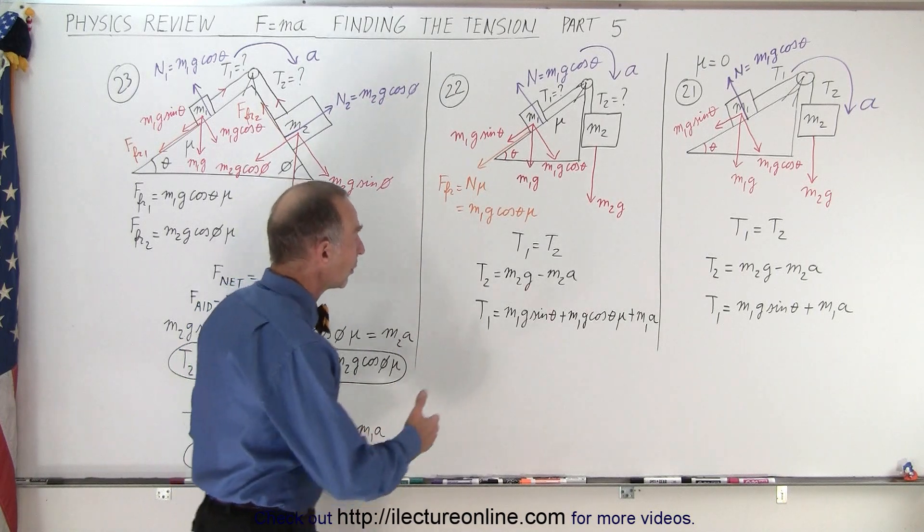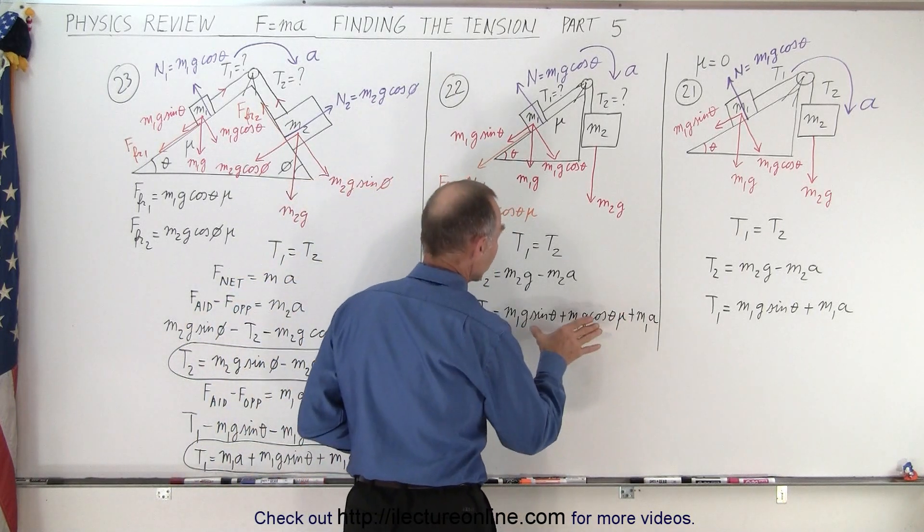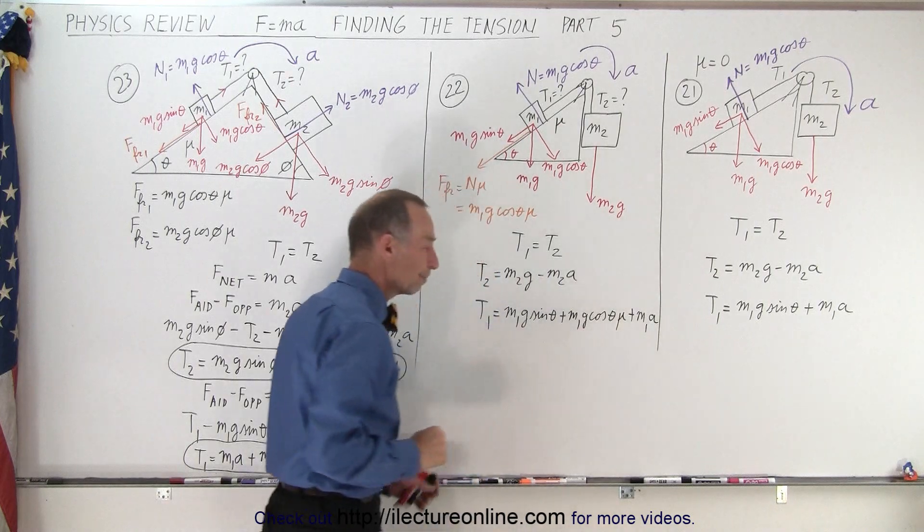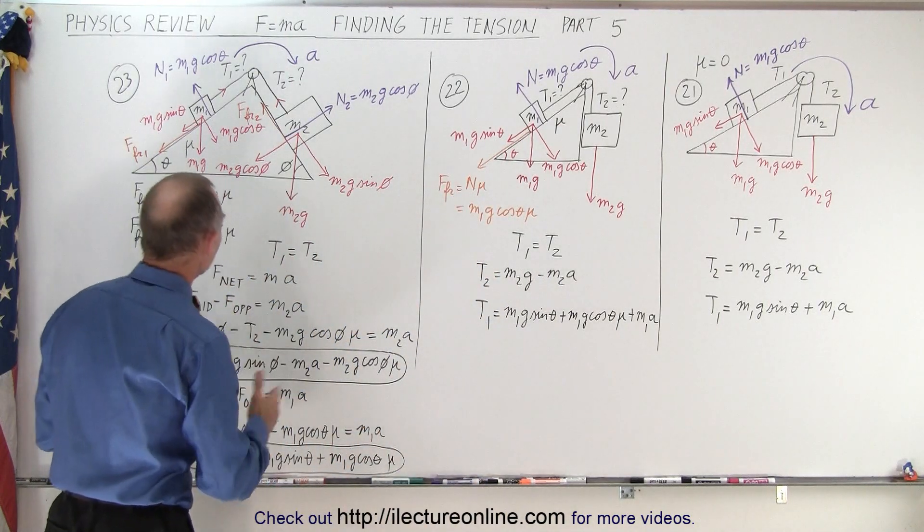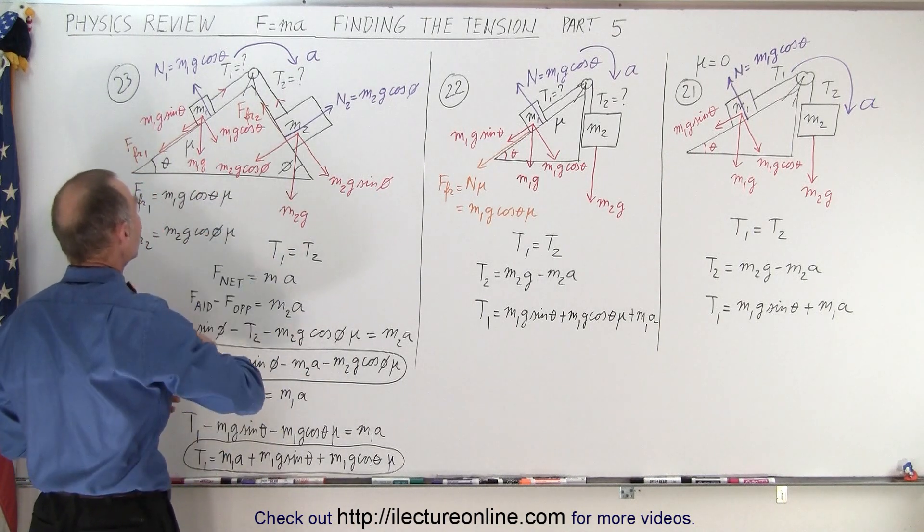And so you can see that T1 will be the sum of these three components but it will be equal to the difference between those two. And finally, what if we have a double incline plane? An incline on both sides, two masses M1 and M2. Let's say there is friction.